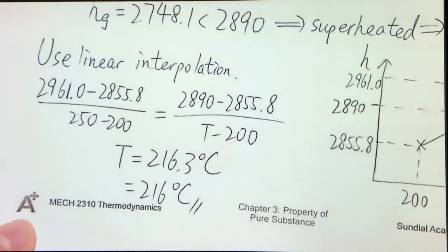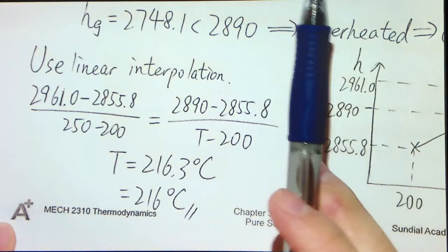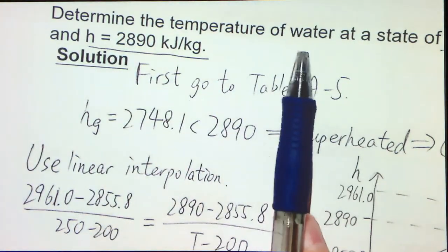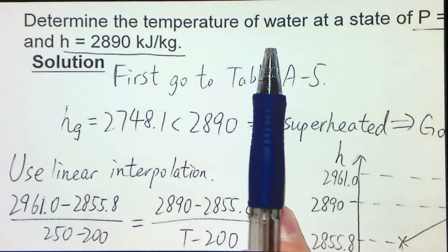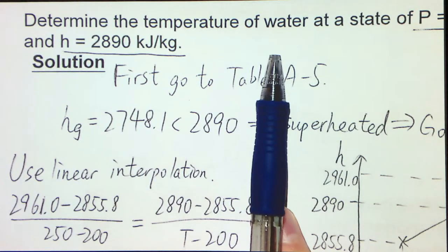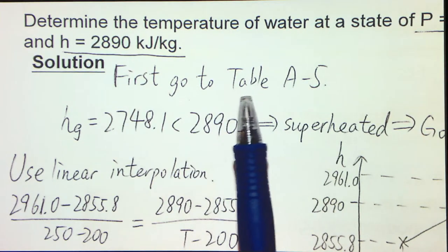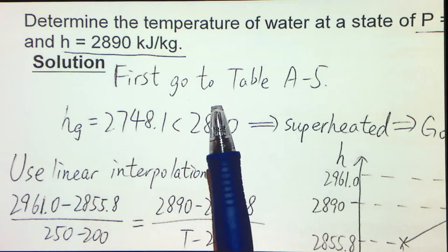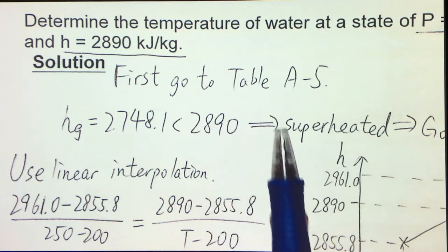So this is our general step. I have illustrated how we can use different tables for giving us the information. In order to determine whether this pure substance is at saturated, superheated, or compressed state, we would always first start with a saturated table and we see the properties at the saturated liquid state and the saturated vapor state.